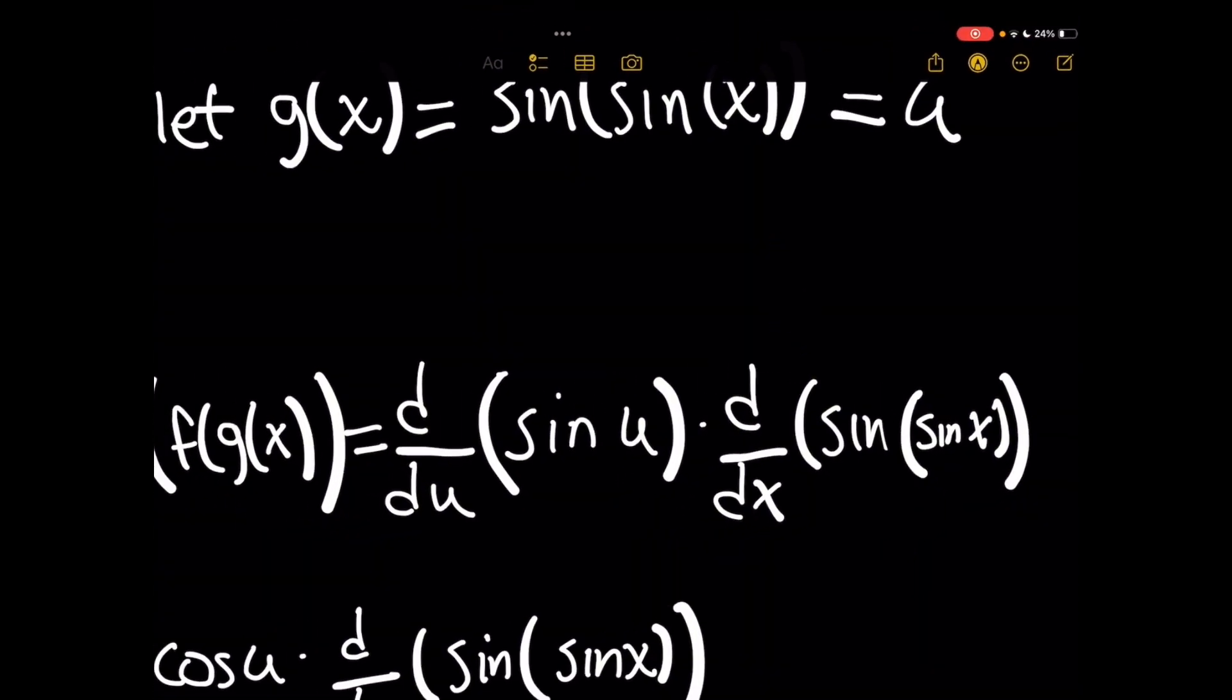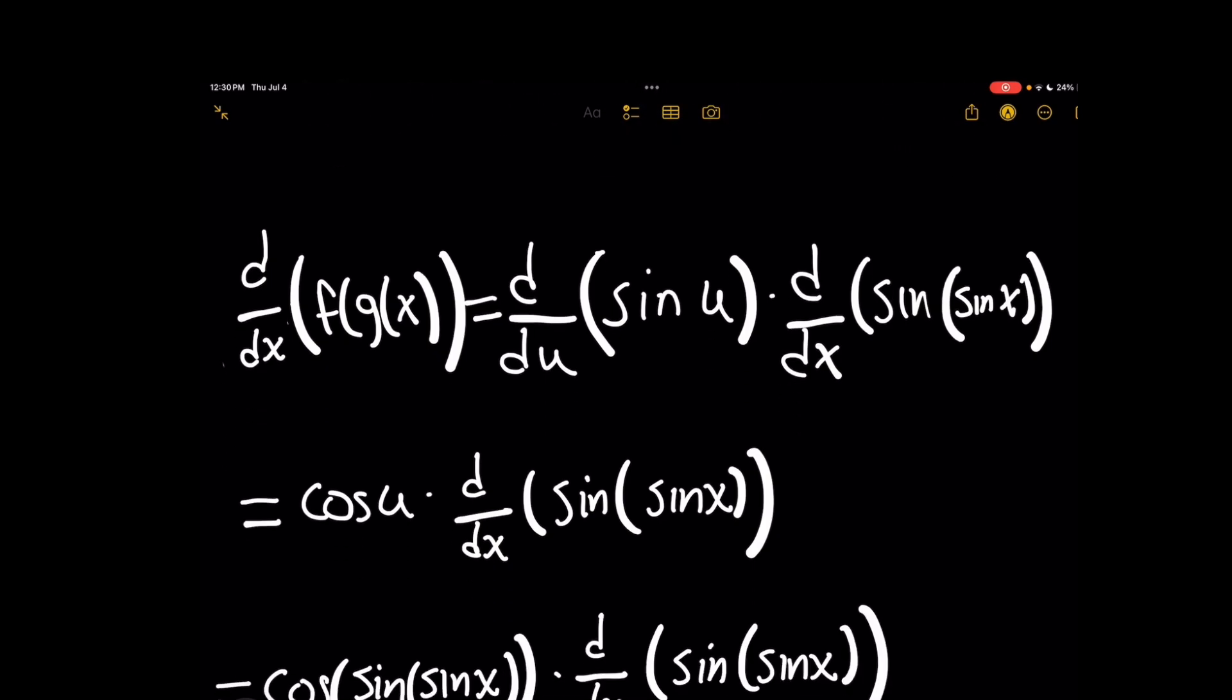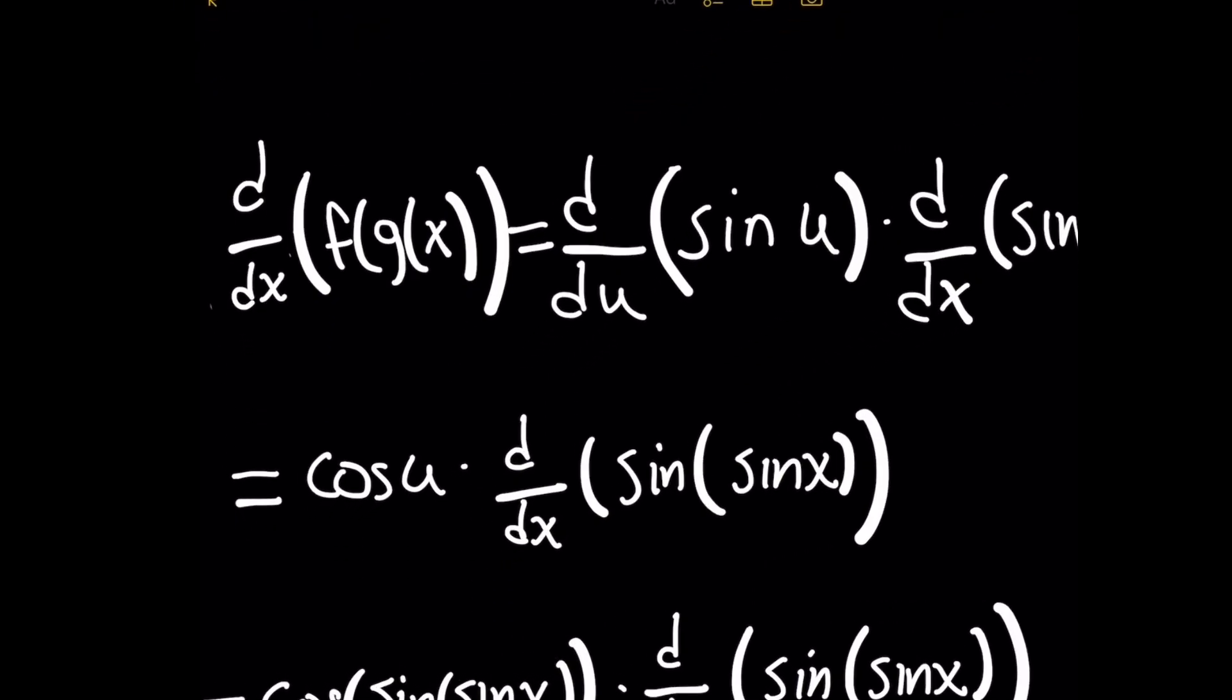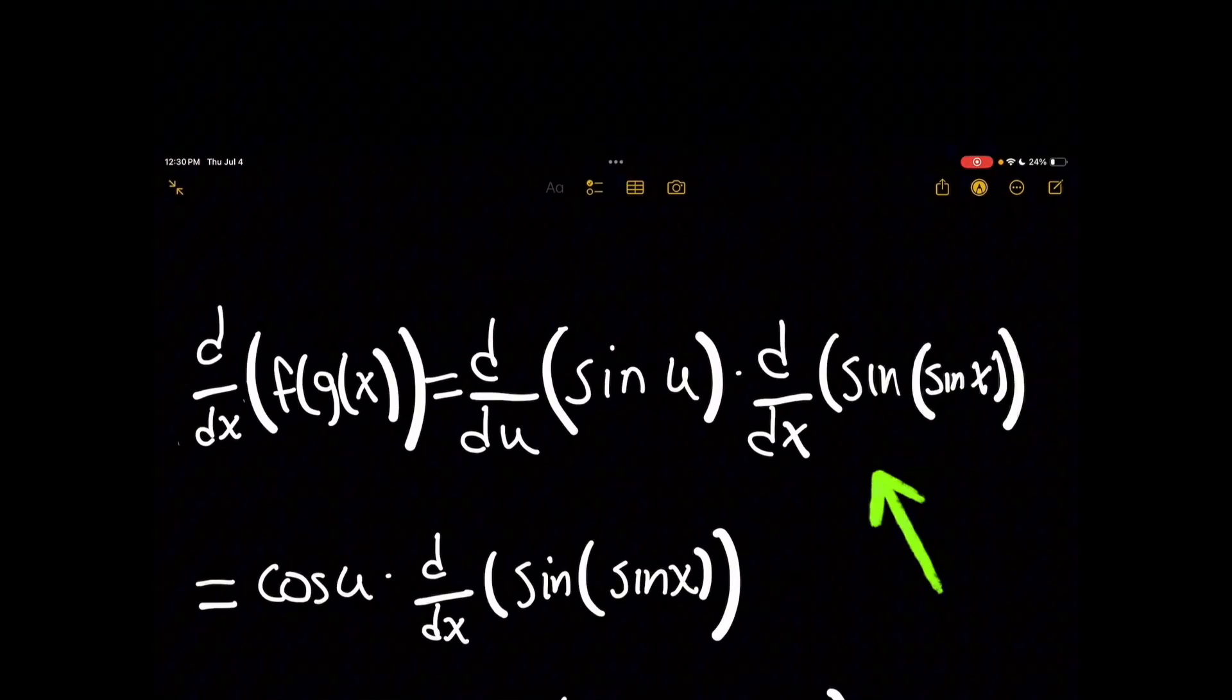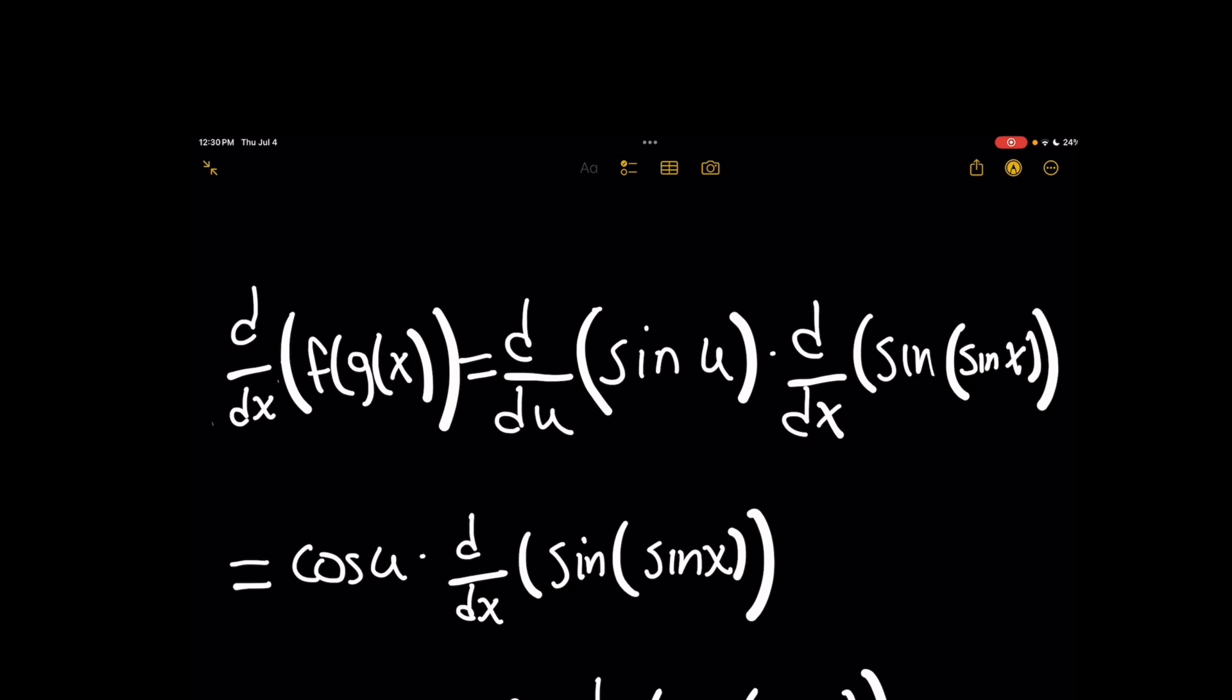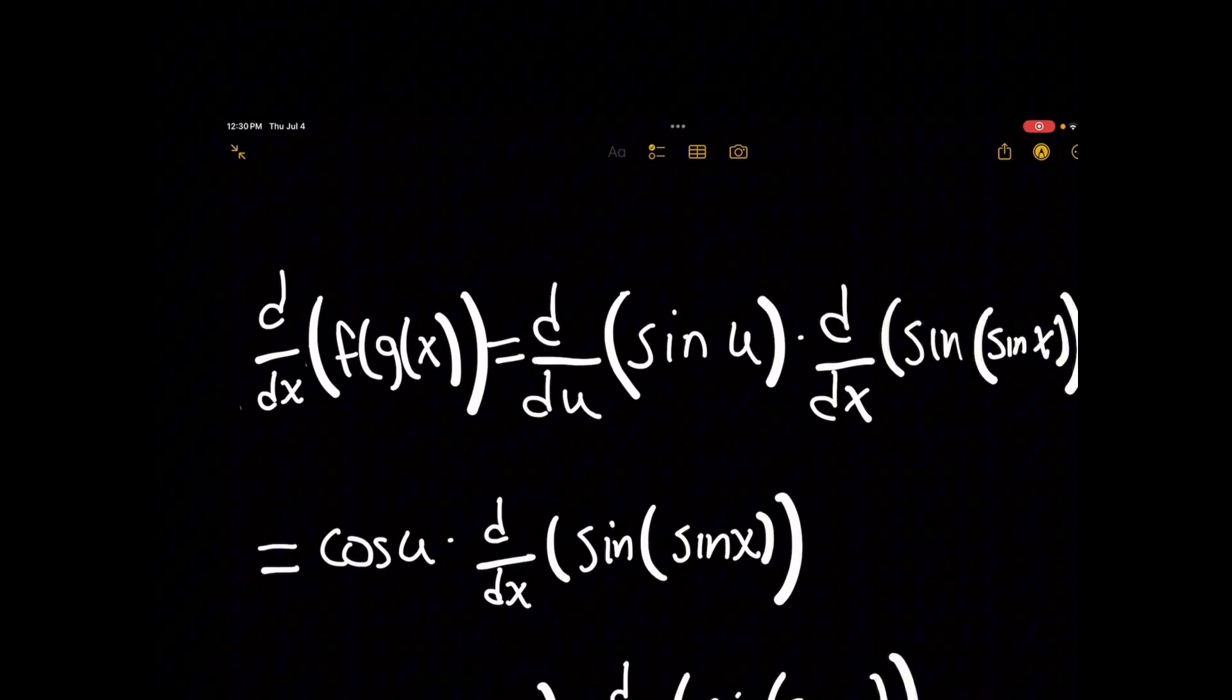So if you do the derivative of sine of u with respect to u, you'll get cosine of u. That one's pretty simple. And then when we multiply that by the derivative with respect to x of sine of sine of x, notice that once again, on that right hand side, we'll need to assign the inner function sine of x to again, a variable called g.